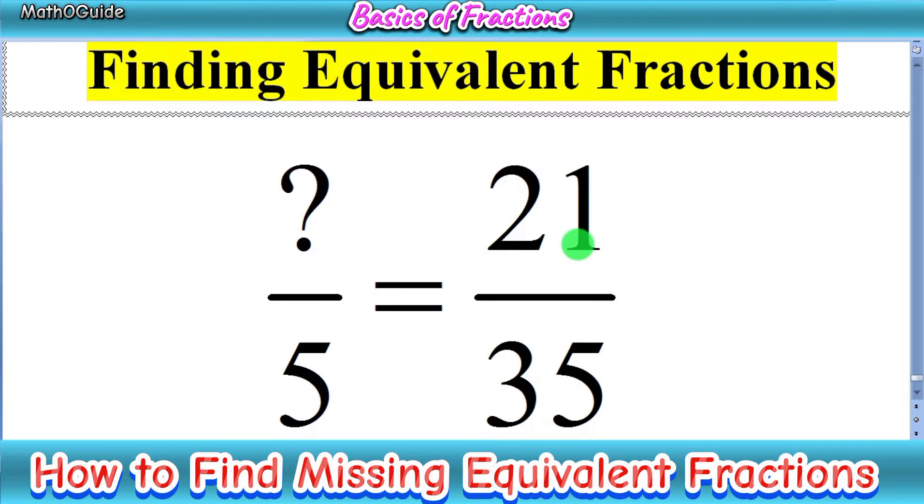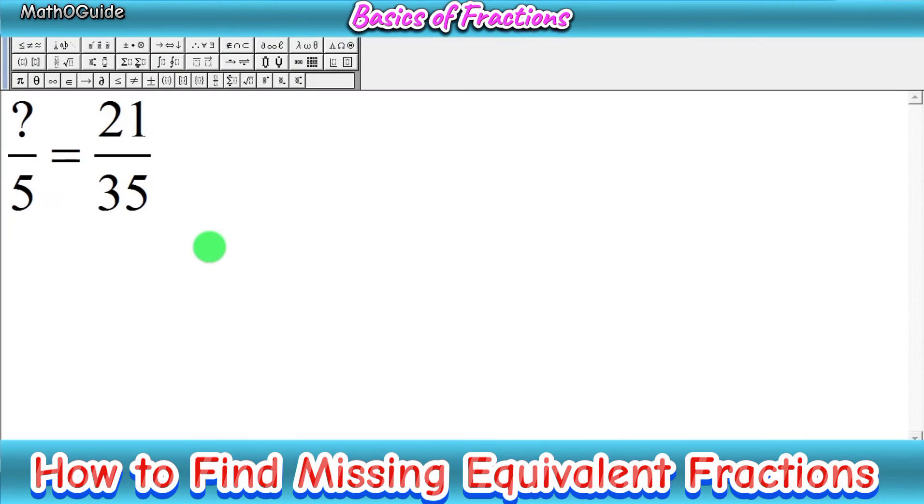Here we have a simple question that we have to complete the equivalent fraction. We have missing number over 5 equals 21 over 35. So first of all, you have to rewrite the given expression. We have to find this missing number.